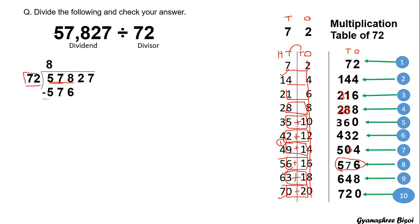I put a subtraction sign and subtract: 8 minus 6 is 2, 7 minus 7 is 0, 5 minus 5 is 0. Then I carry down 2, forming 22, which is less than 72. Since I need to carry down another digit in the same step, I put 0 in the quotient and carry down 7, forming 227.